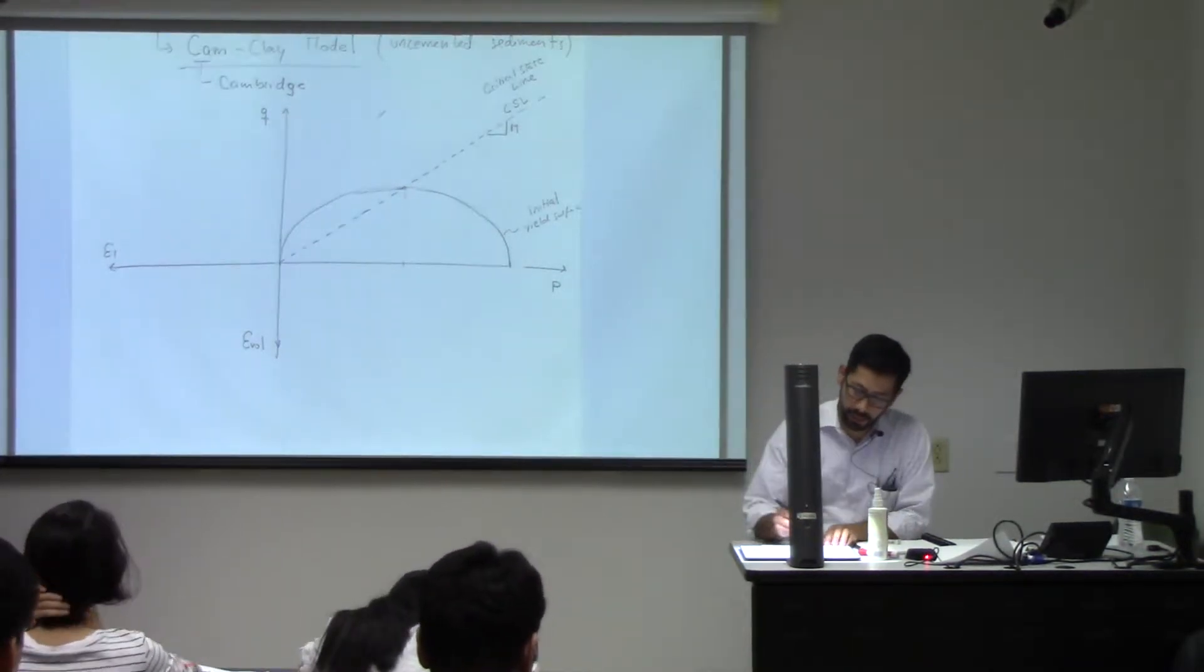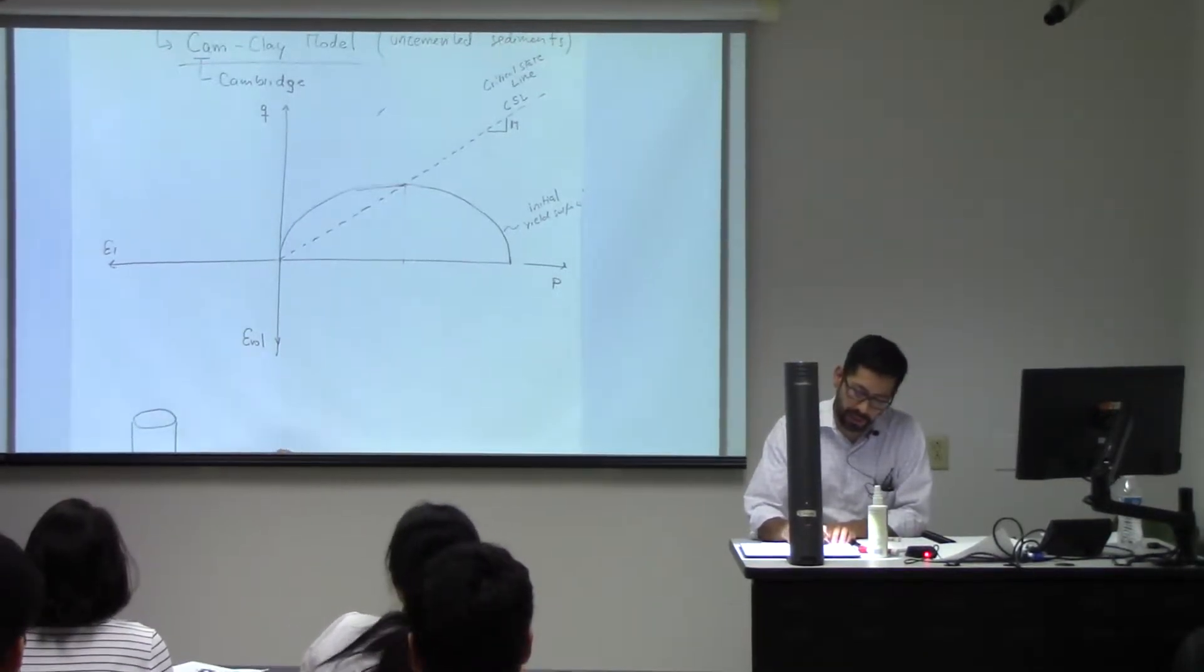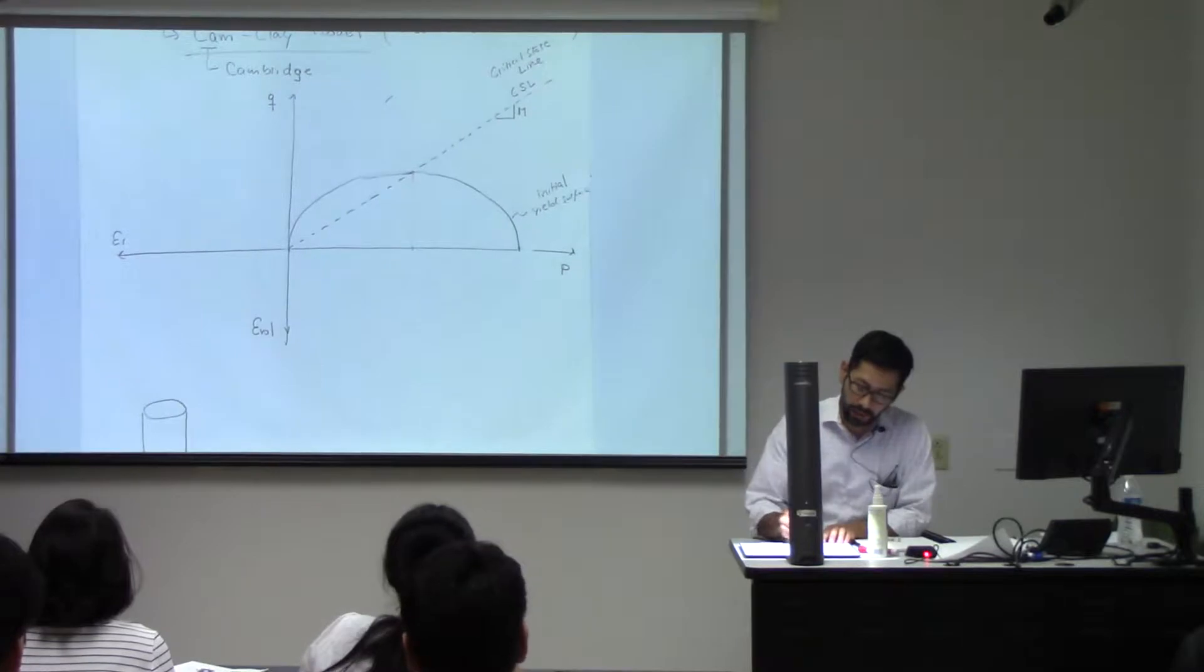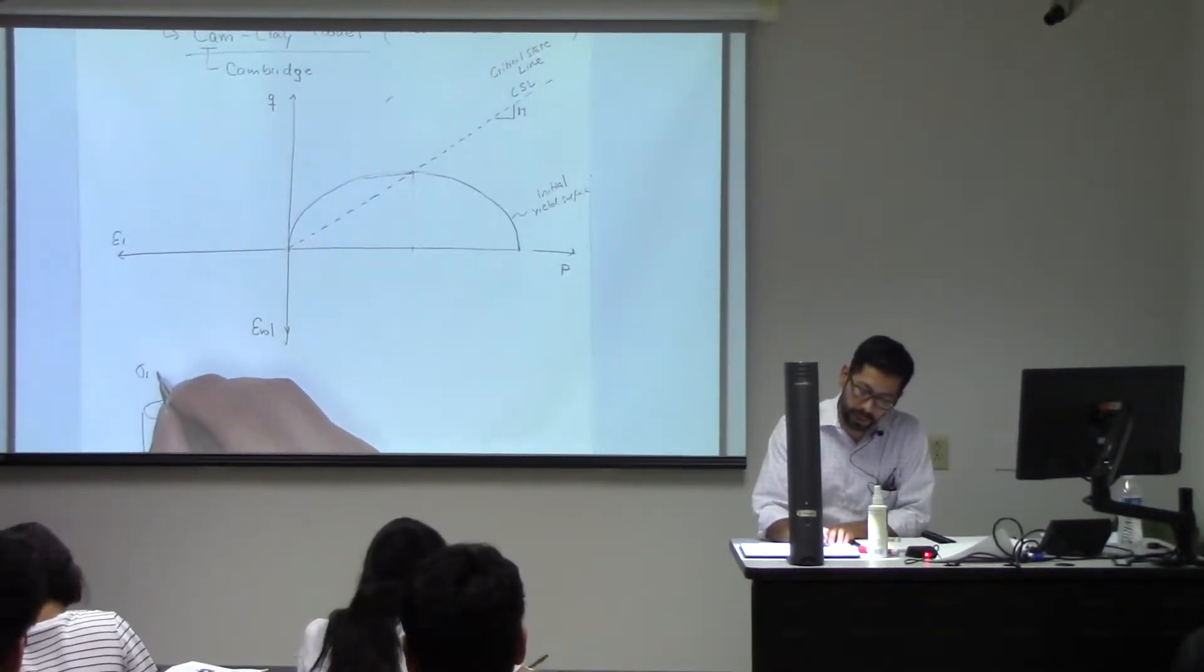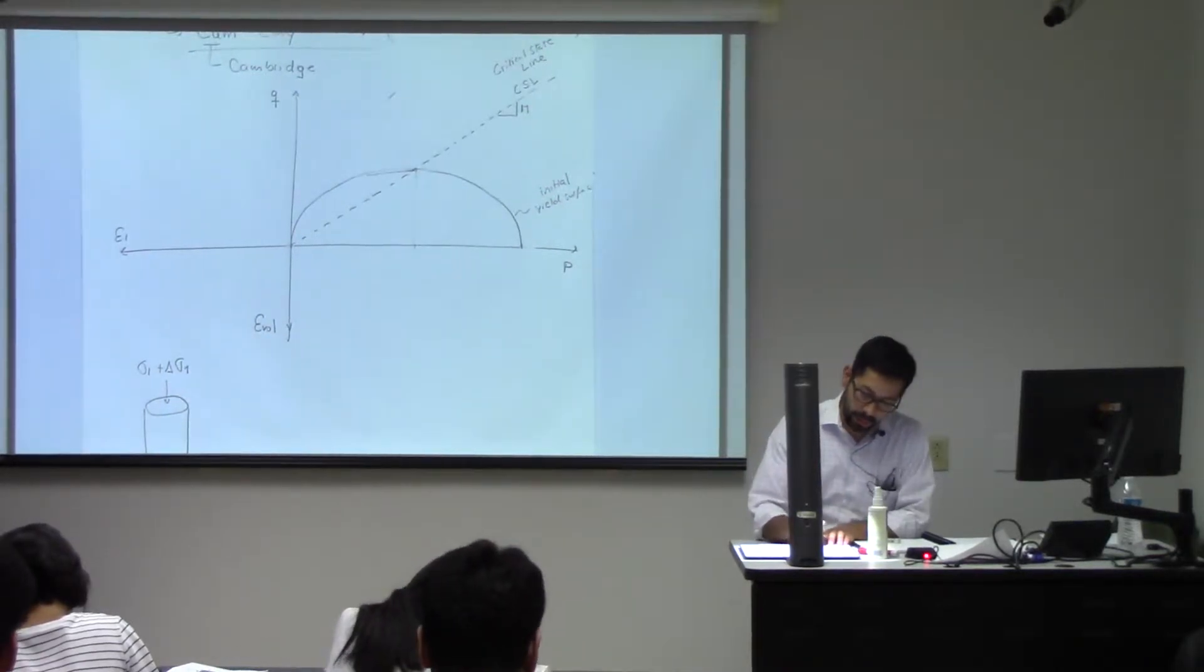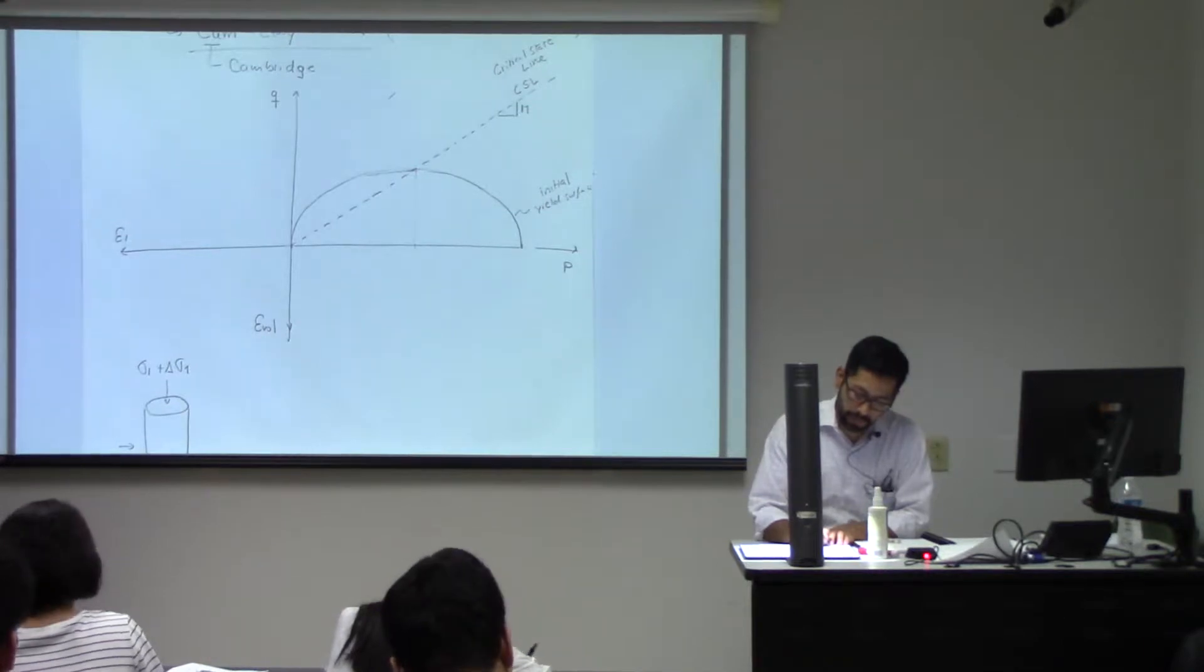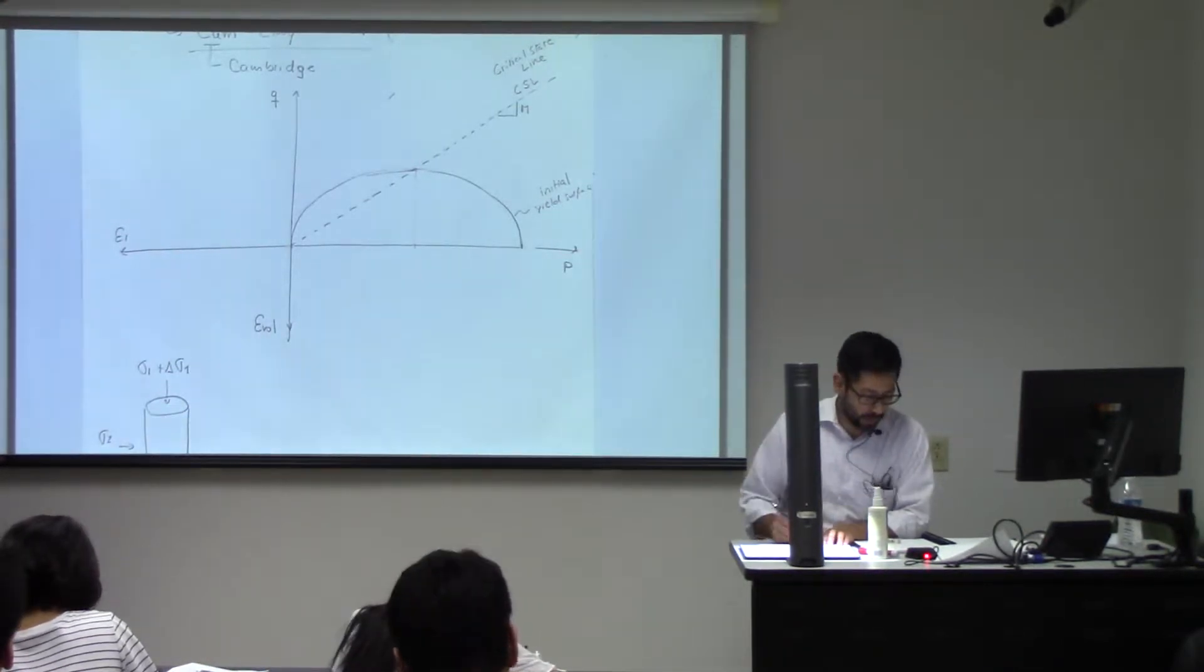In these triaxial tests, usually axisymmetric triaxial tests, you apply a deviatoric stress by increasing the axial stress while you keep the radial stress to be constant.